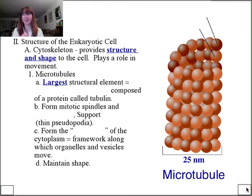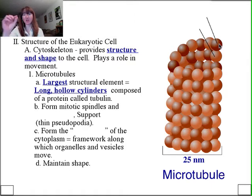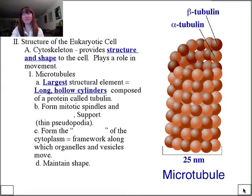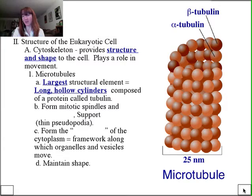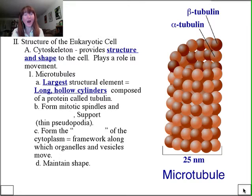Microtubules are long, hollow cylinders formed by two proteins — alpha and beta tubulin — that repeat and wrap around helically, leaving a hollow core. They are two separate polypeptide chains that interact with one another to form the overarching protein tubulin. Because two separate polypeptide chains interact to form this protein, tubulin has quaternary structure.